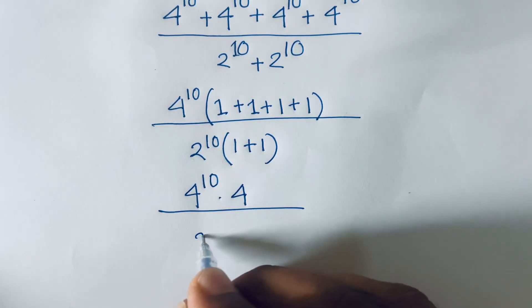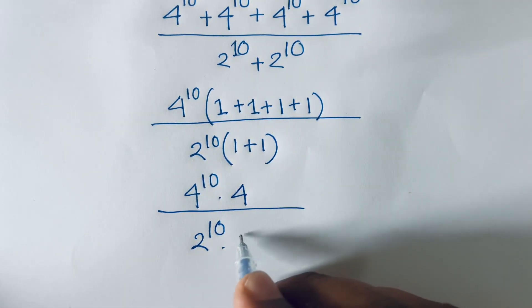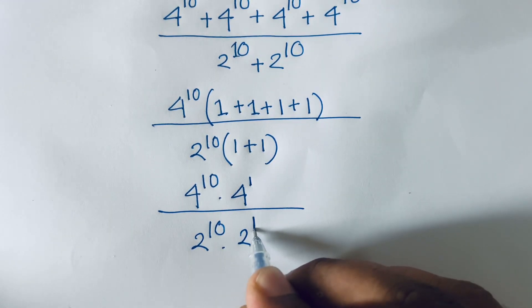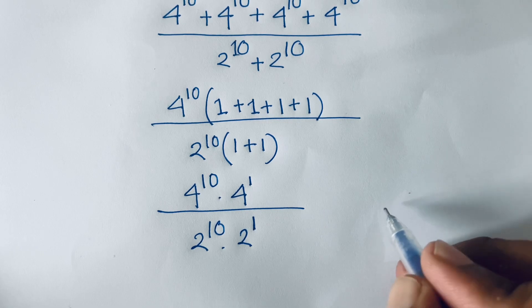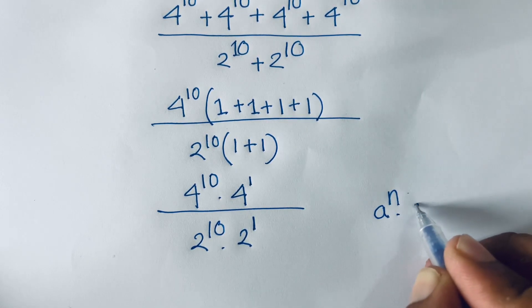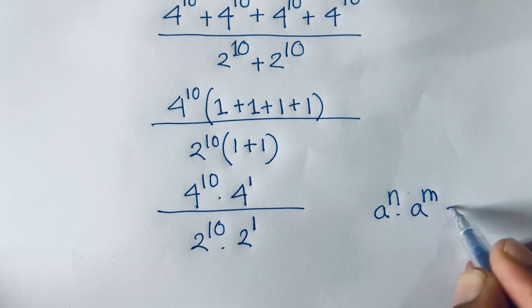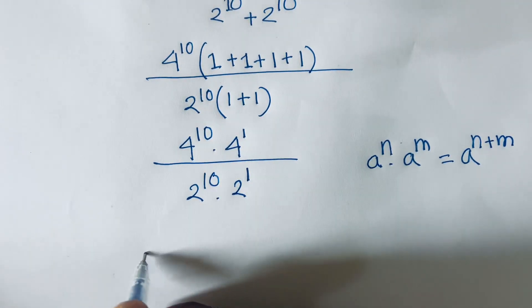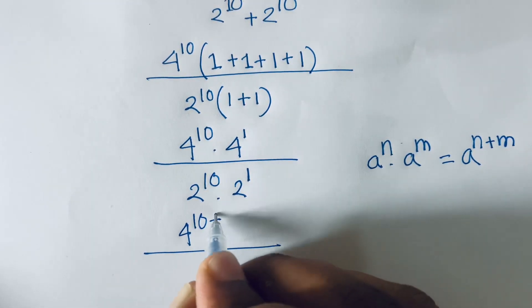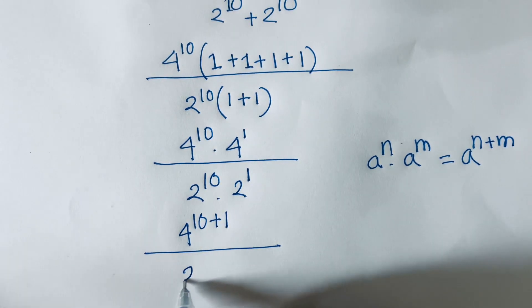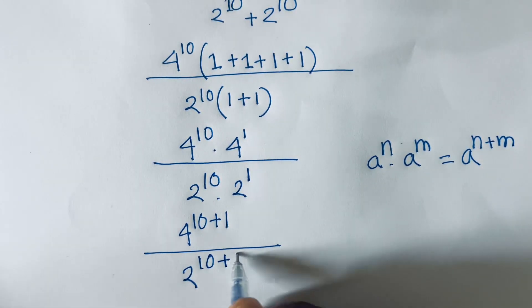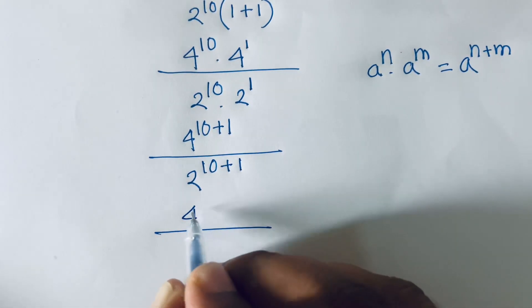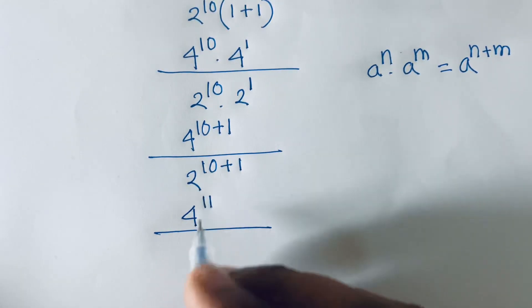In the denominator, 2 to the power 10 is common, giving 1 plus 1, which equals 2. So the denominator is 2 to the power 10 times 2. Using the exponent rule a^n × a^m = a^(n+m), the expression becomes 4 to the power 11 over 2 to the power 11.